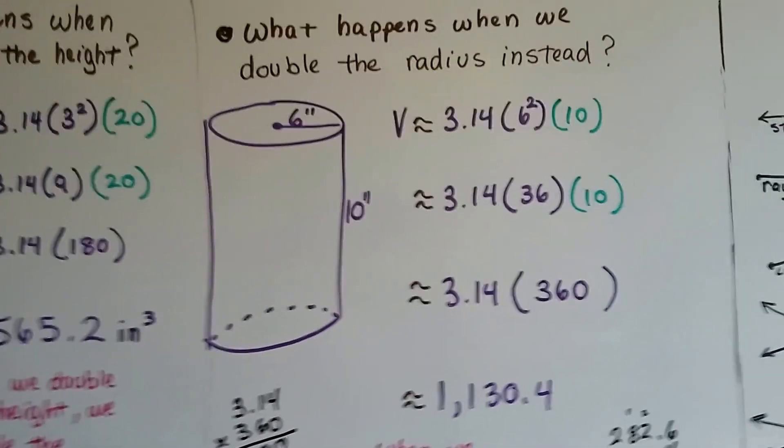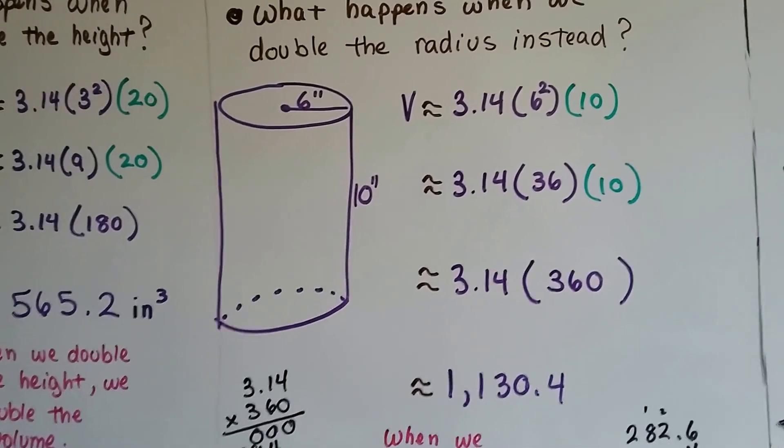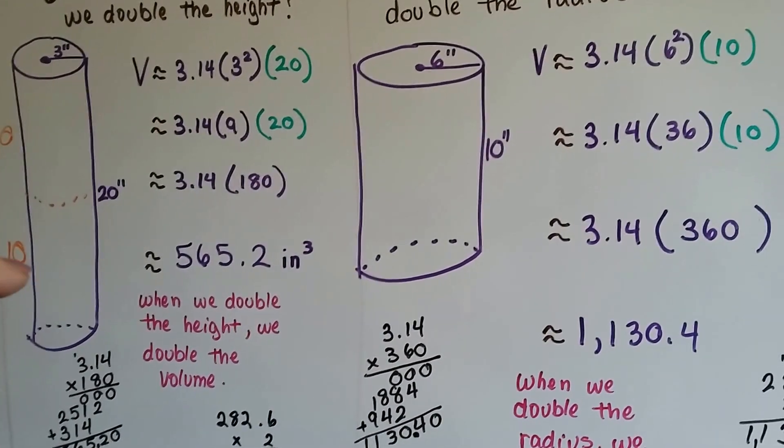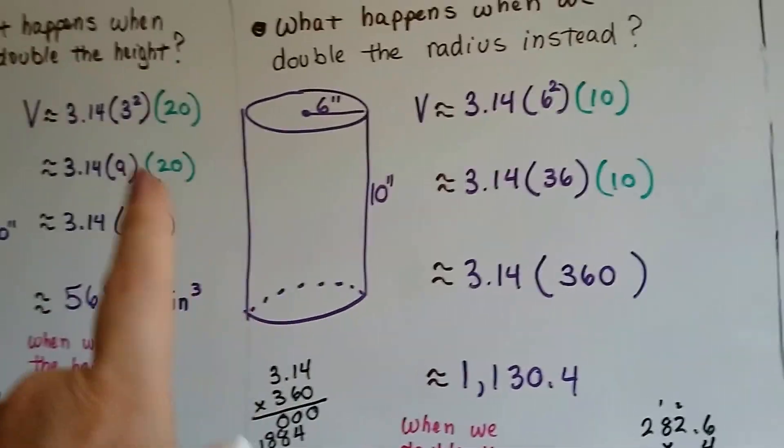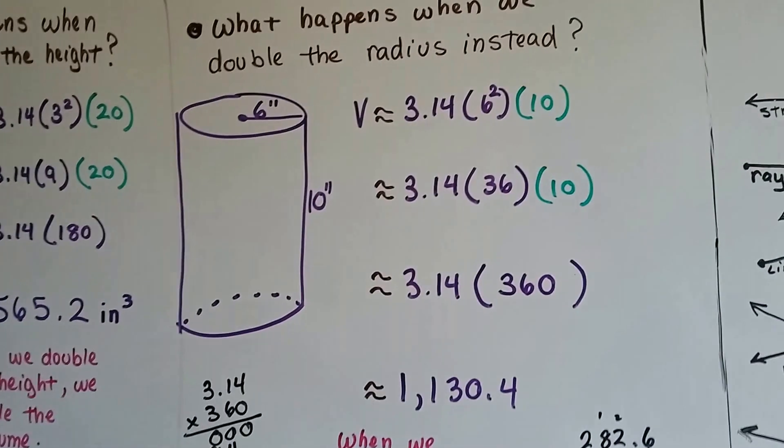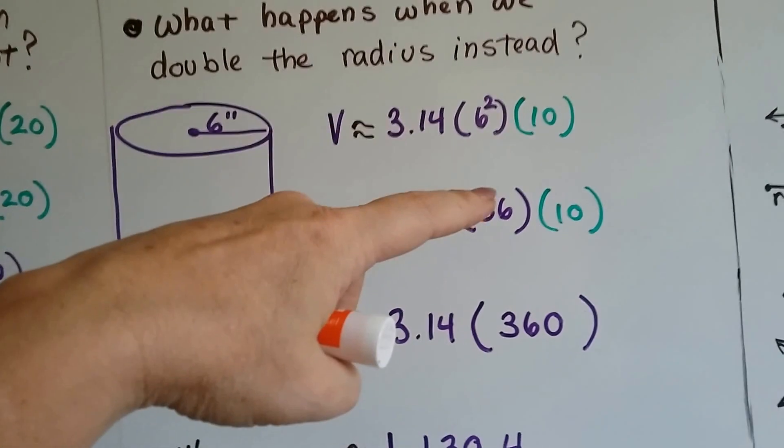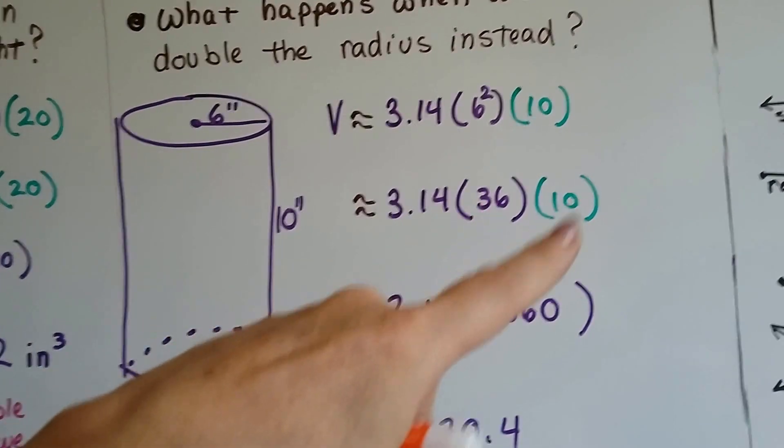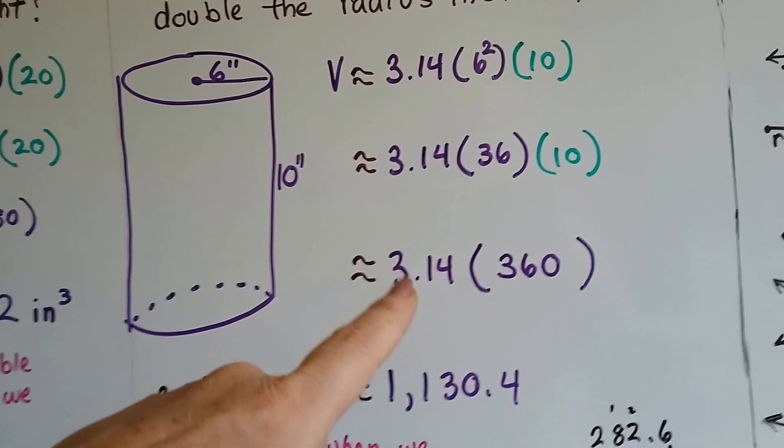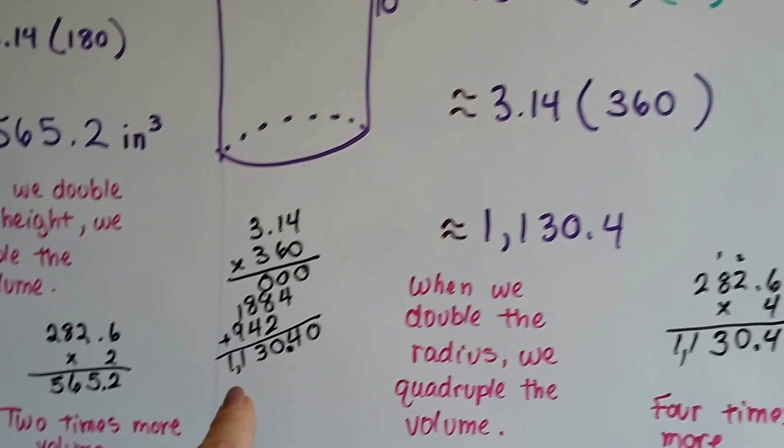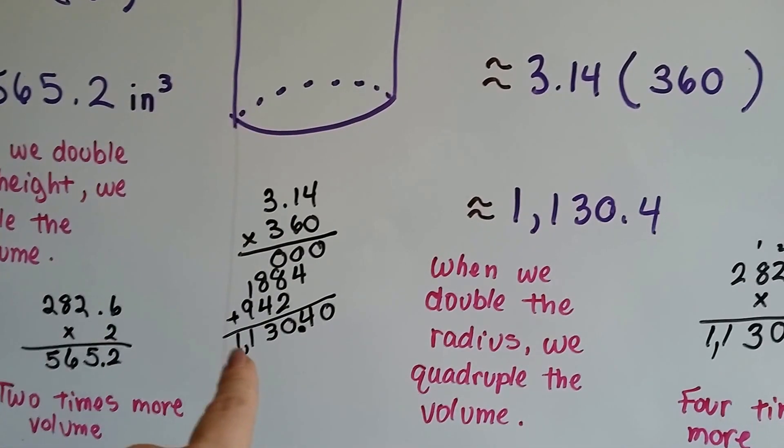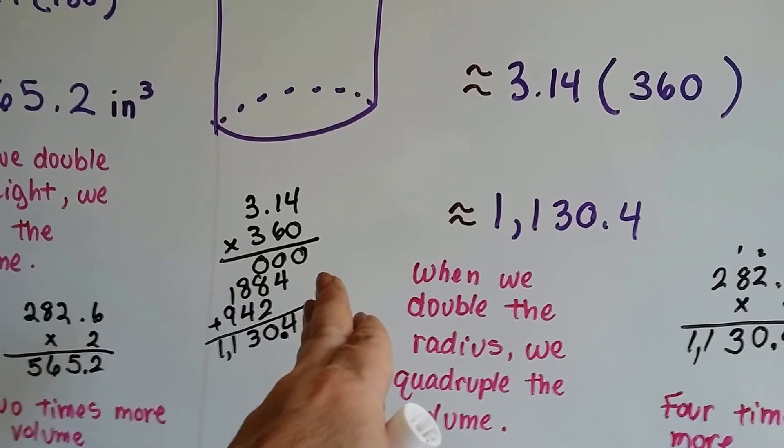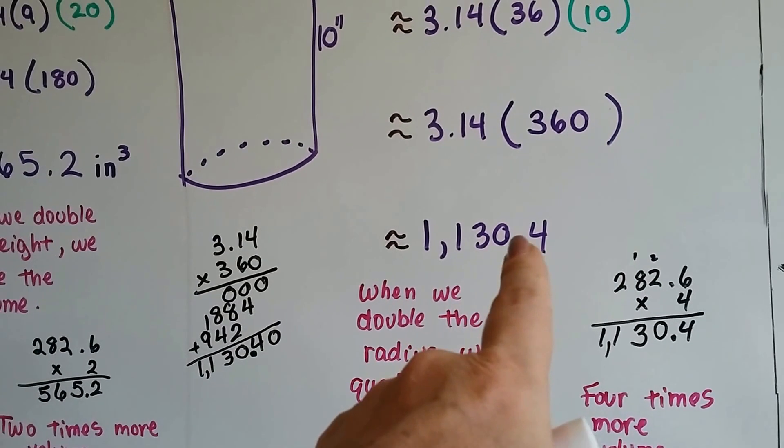Now, what happens when we double the radius instead? This one made it like the two were stacked on top of each other, the 10 inch and the 10 inch, and it doubled the volume. Well, instead of a 3 inch radius, what if we had a 6 inch radius? Well, 6 times 6 is 36. We drop down the 10. And we do the 36 times 10, which is 360. Then 3.14 for pi times the 360. We do a little math on the side and we get 1,130.40. And we take the zero off because we're rounding the nearest tenth. So we get 1,130.4.